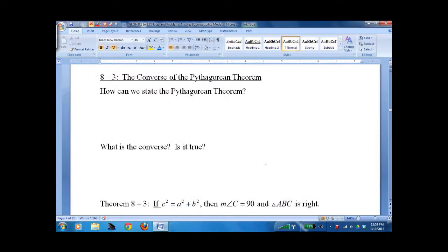Lesson 8.3, the converse of the Pythagorean Theorem. So how can we state the Pythagorean Theorem? Well, it's actually an if-then. If we have a right triangle, then the square of the legs, sum of the square of the legs is equal to the square of the hypotenuse, more commonly known as a-squared plus b-squared equals c-squared.